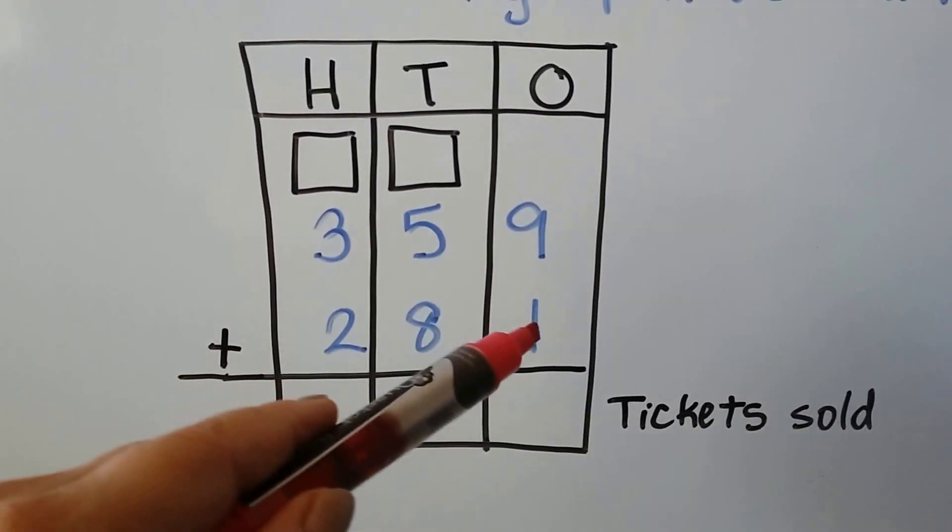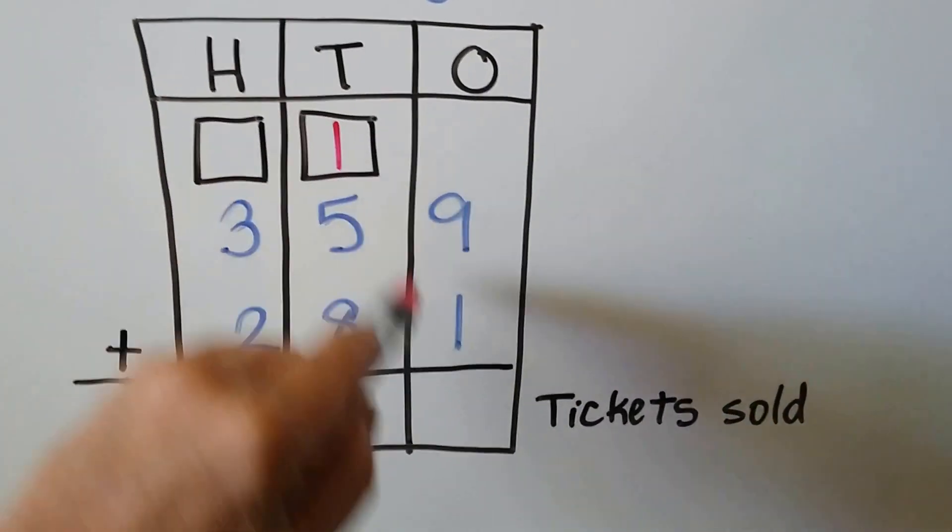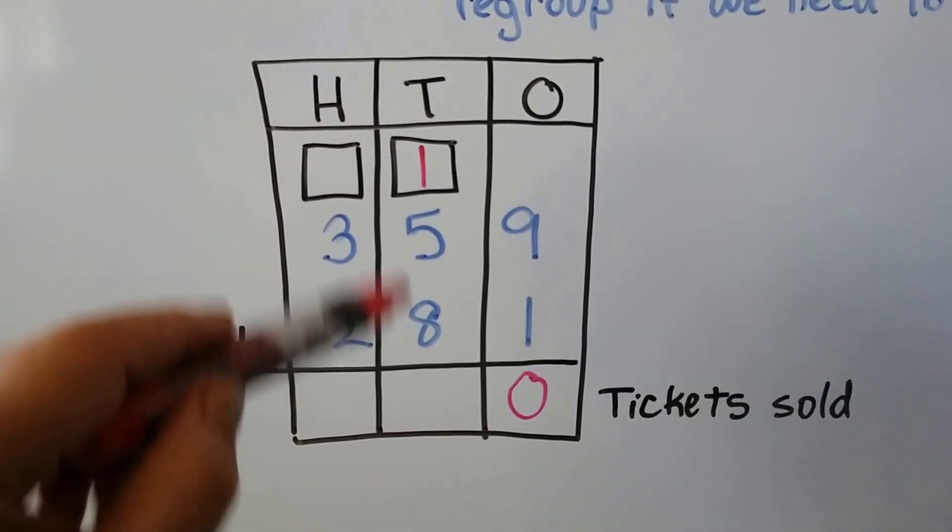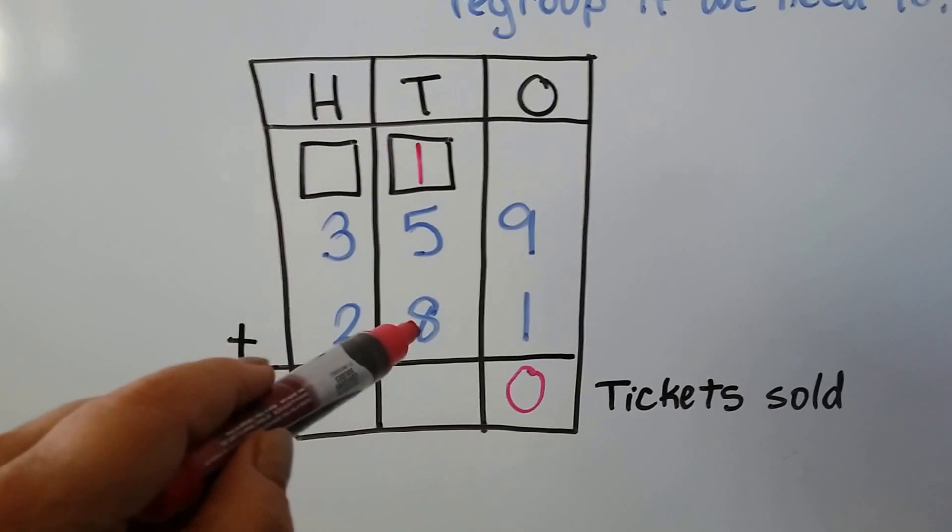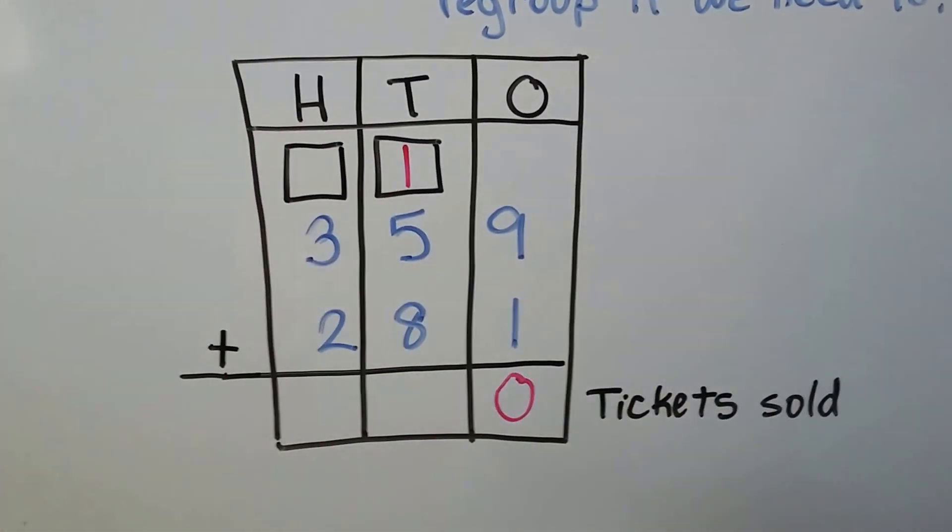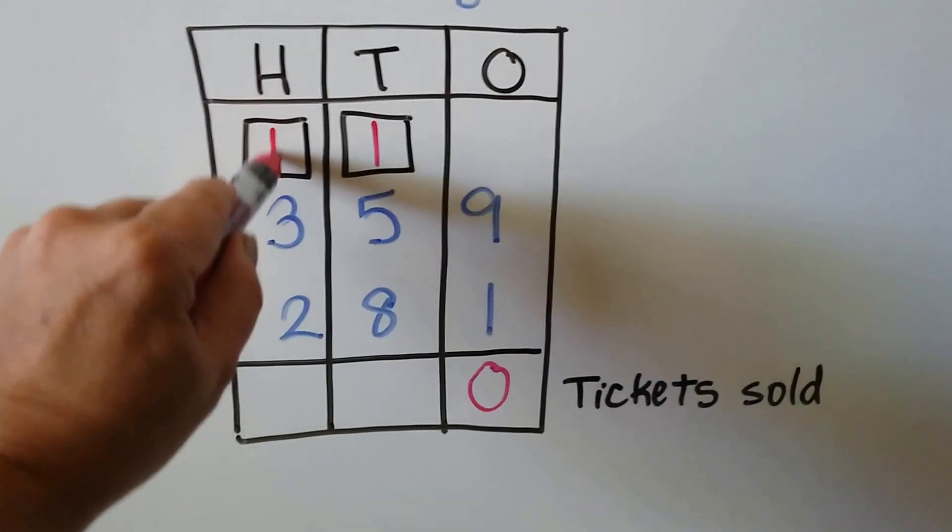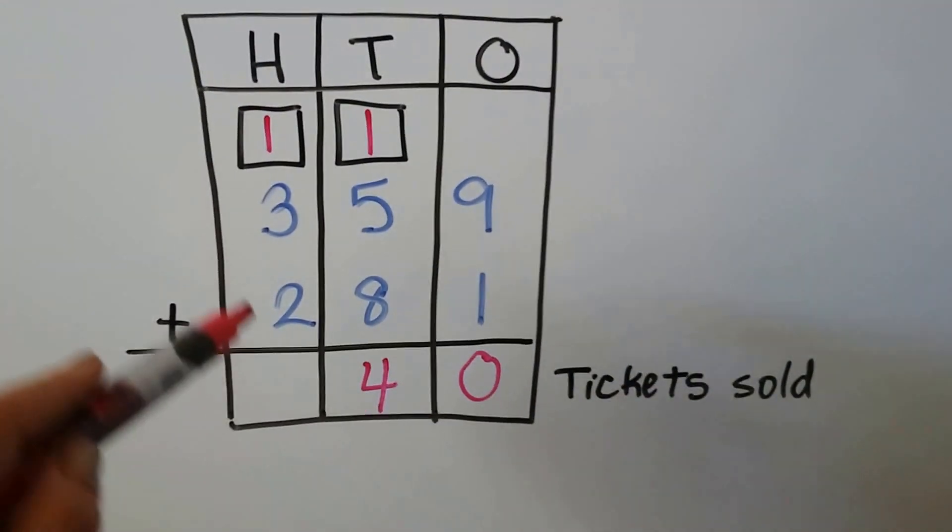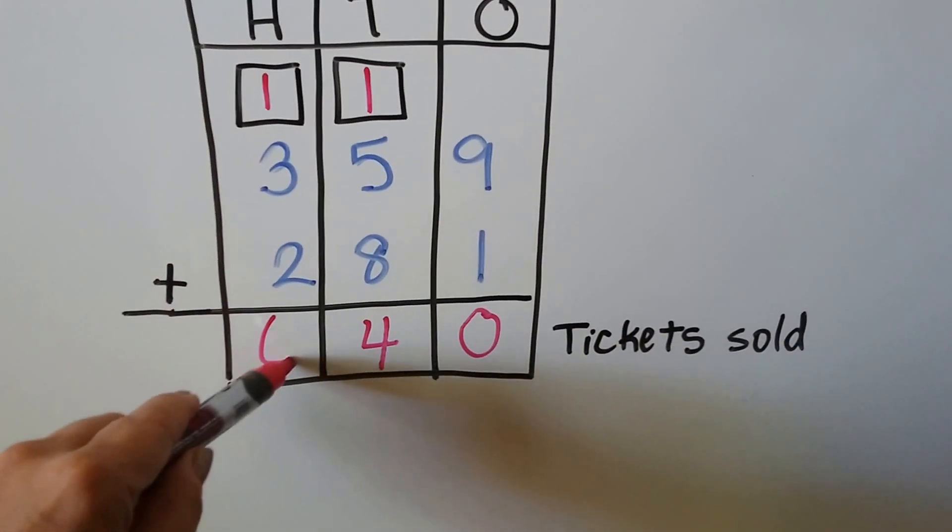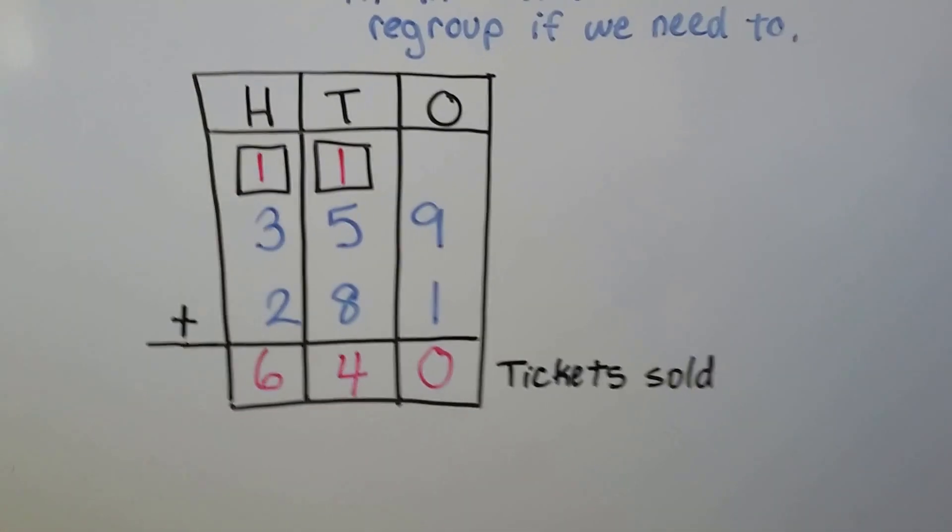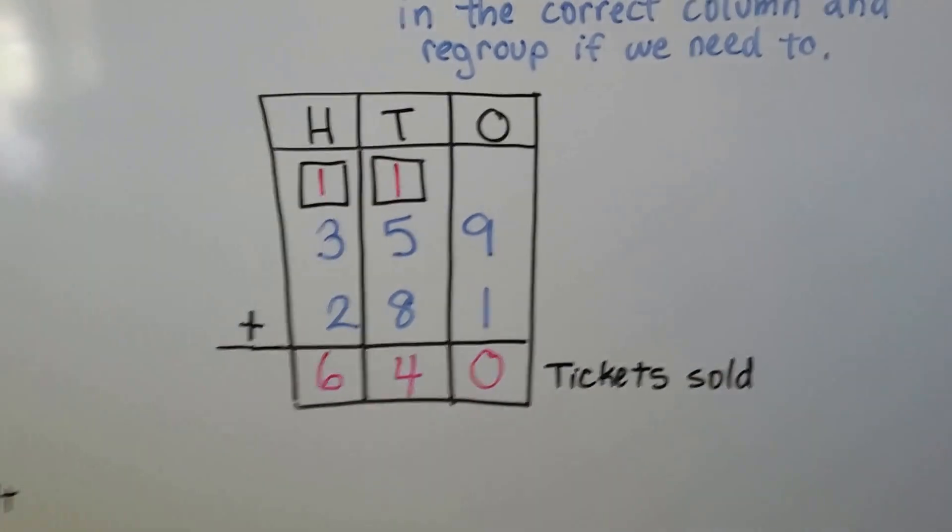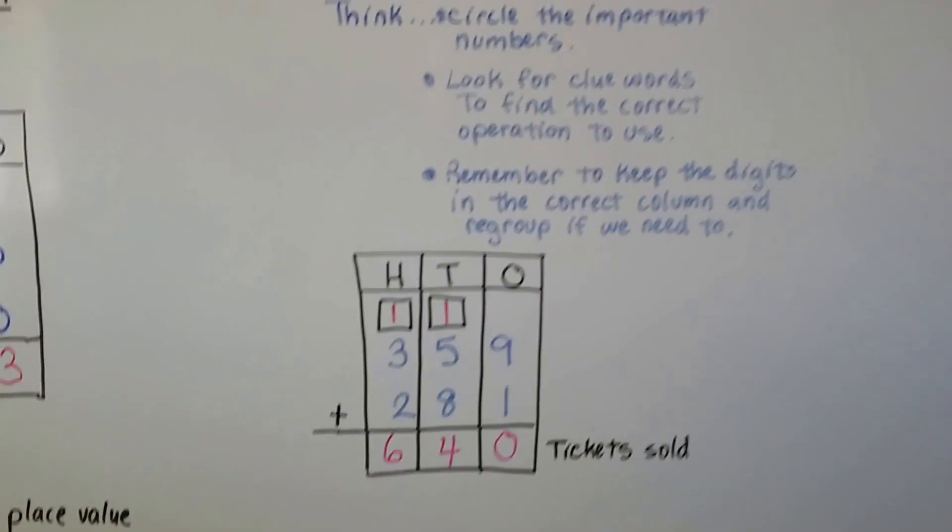We start in the ones place. Nine plus one is ten. We regroup. Put the zero down here. Now we have our one in the tens place. We add the tens, starting with the larger number eight, nine, ten, eleven, twelve, thirteen, fourteen. We can't put the fourteen here. We have to put the one up here and the four down here, don't we? Now we can add the hundreds place. Four, five, six. And we make sure we label it because word problems need to be labeled for the answer, okay? So we have 640 tickets. Gotta label it, all right?